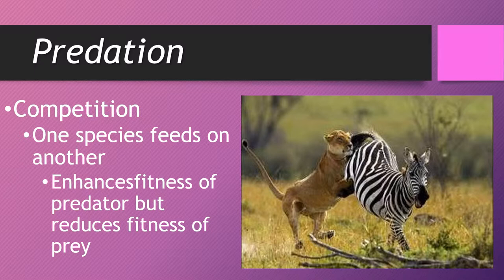Predation is a form of competition where one species feeds on another, like a lion eating a zebra. This enhances the fitness of the predator but reduces the fitness of the prey. Fitness means being able to survive and reproduce — because the predator is killing the prey, the prey can no longer reproduce.